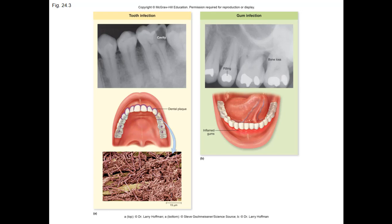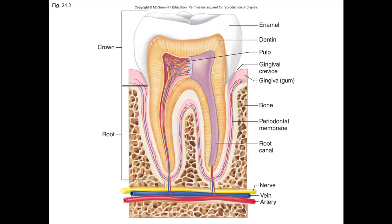Periodontal disease is due to chronic inflammation of gums and tissues around the roots of the teeth. This is also slow to develop and usually asymptomatic until well advanced, when the individual demonstrates bleeding, sensitive gums, bad breath, and loosening of teeth. The active agent is dental plaque, cariogenic or not. The plaque forms in the crevices of the gingiva next to the gum and teeth, and that's where you have buildup of bacteria and subsequent next steps.